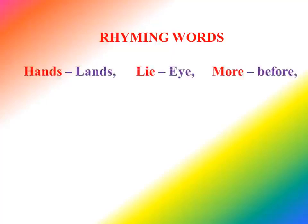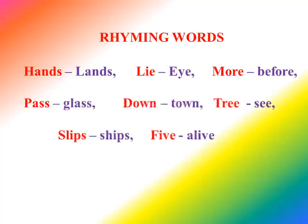Dear students, here we have rhyming words from the poem. You have to learn these rhyming words for the exam. First: hands — lands. Light — eye. More — before. Pass — glass. Down — town. Train — sea. Slips — ships. Five — align. You have to learn all these rhyming words from your notebook or textbook.